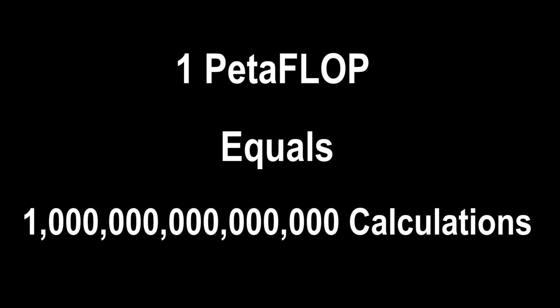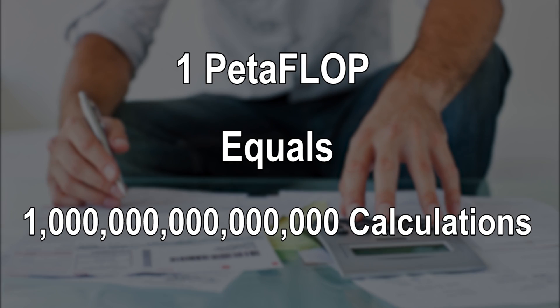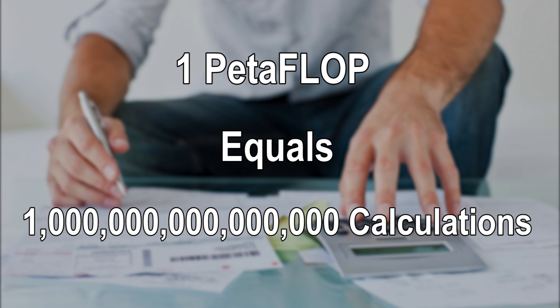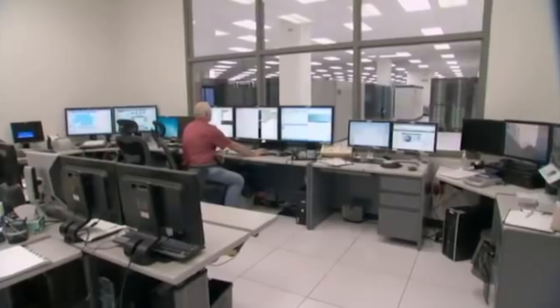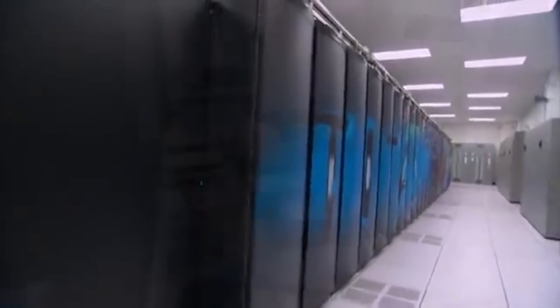A petaflop is equal to about 1 million billion calculations per second. One estimate suggests that it would take a human about 32 million years to complete the same task. Now we know what everyday computing devices are capable of, let's see how they compare to the top 10 supercomputers in the world.